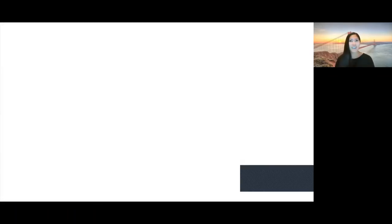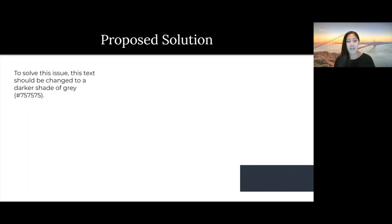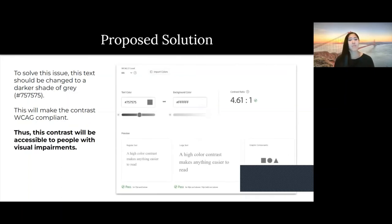So how do we fix that? Just make it a little bit darker. In this case, the lightest shade of gray that will pass the WCAG is just a slightly darker shade of gray, which the code for that is 757575. It'll make it compliant, and thus the contrast will be accessible to people with visual impairments. Seeing in the screenshot on the right how that new color 757575 against the white background creates a better contrast ratio that passes the contrast checker.